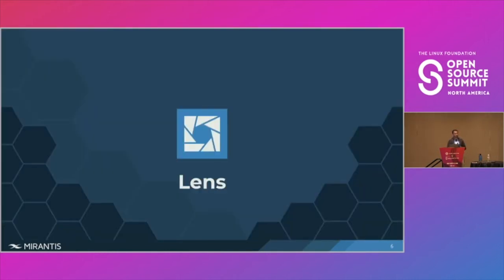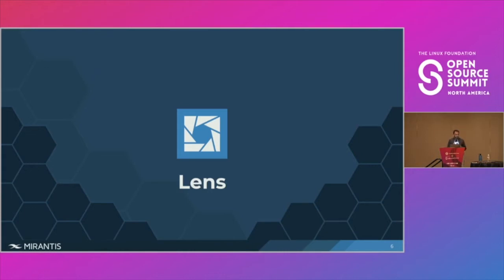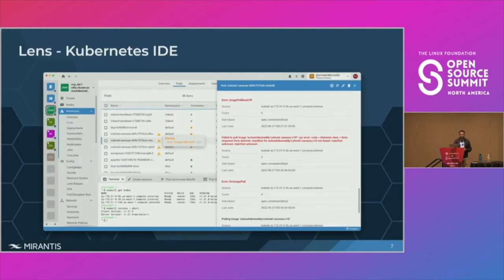This is where Lens comes into the picture. Lens simplifies the way we work with Kubernetes and provides full situational awareness for everything we run in Kubernetes. It is a desktop application that connects to a cluster using a kubeconfig file, so it does not need to be deployed on the server side — it is a client-side application. With Lens, I don't have to write kubectl get pods, deployments, or services and provide additional options to sort or filter the output.